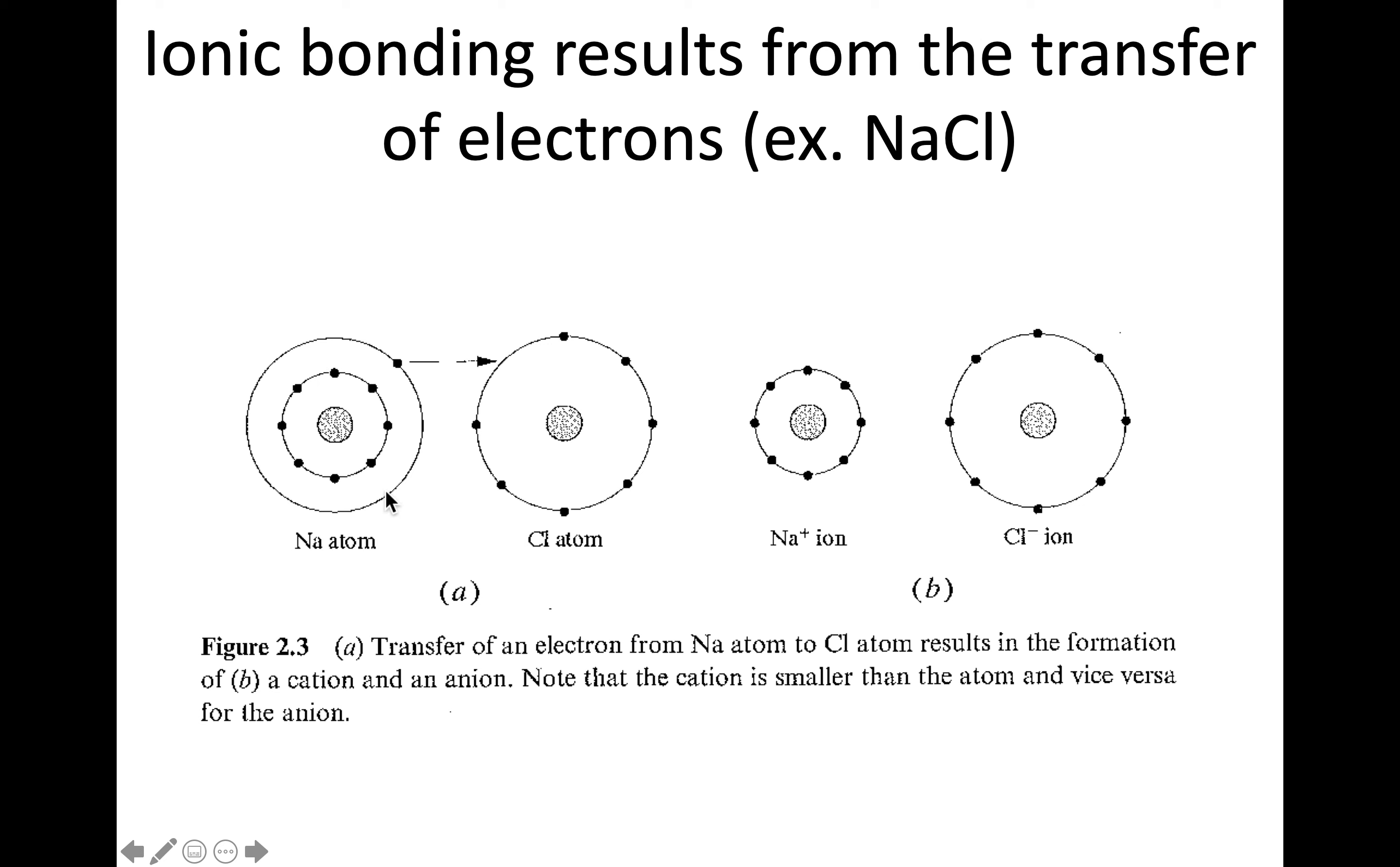So this process is one where each of them are trying to get to a noble gas configuration. And sodium does that by removing this one lone electron in that shell and giving it, transferring it to the chlorine atom where it needs one electron to have a full shell. And so the initial part is a transfer of electrons and then resulting in a positive ion and a negative ion which we call the cation and an anion which are then dissimilar charge which are then going to have an attraction to one another.